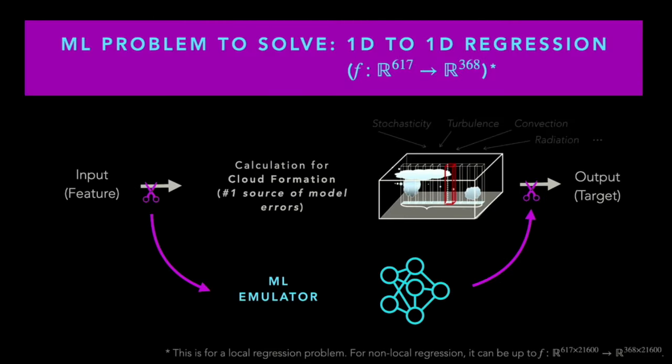What I want to do is basically a one-day regression problem to emulate a really complicated physical system inside climate models. One-day regression may sound simple, but I will show you why this is a difficult and important problem to solve.